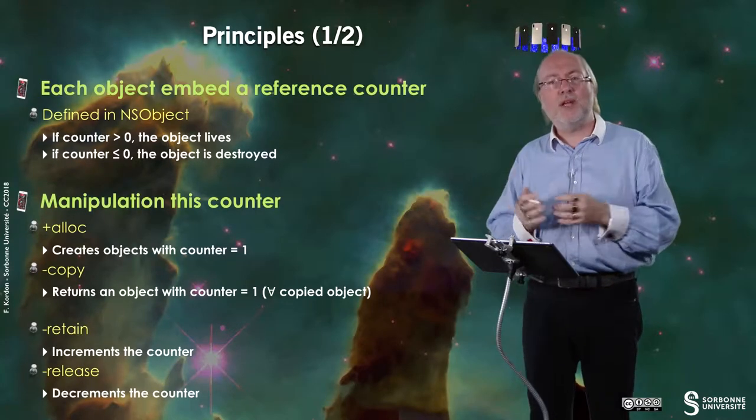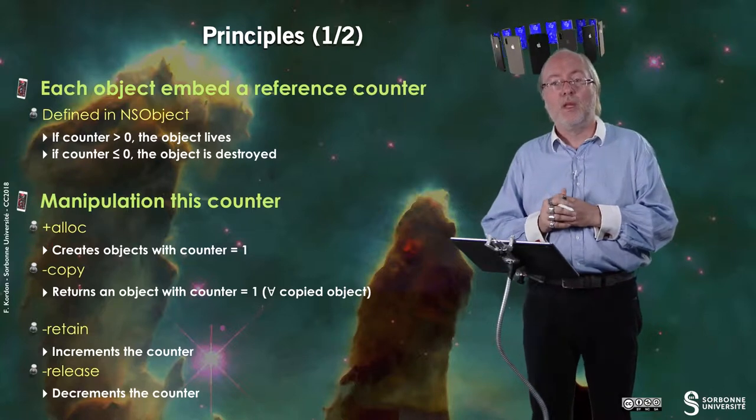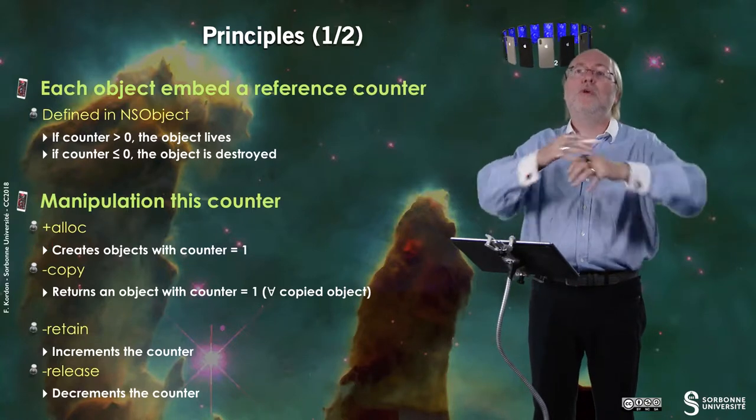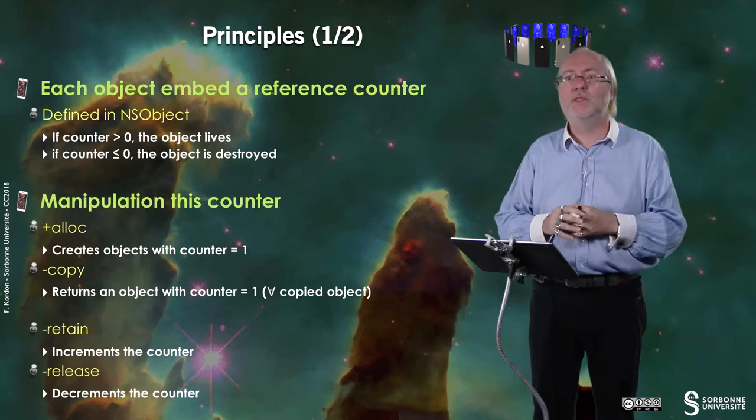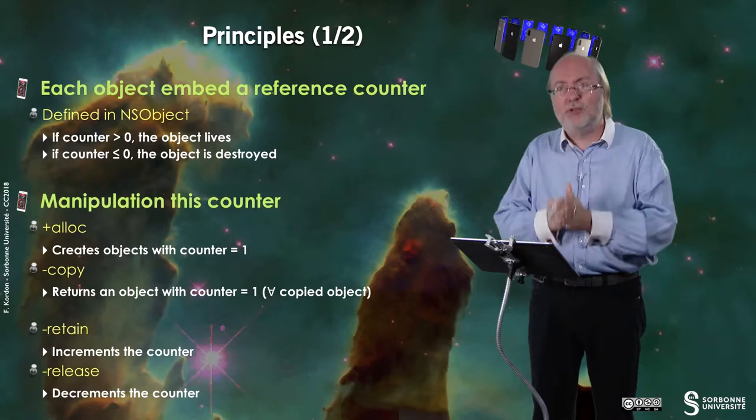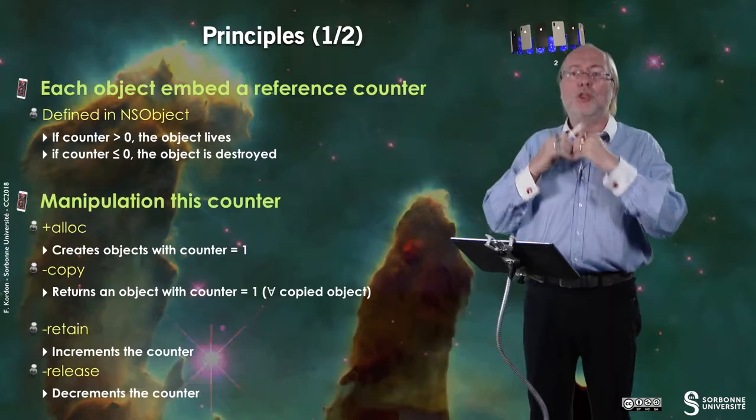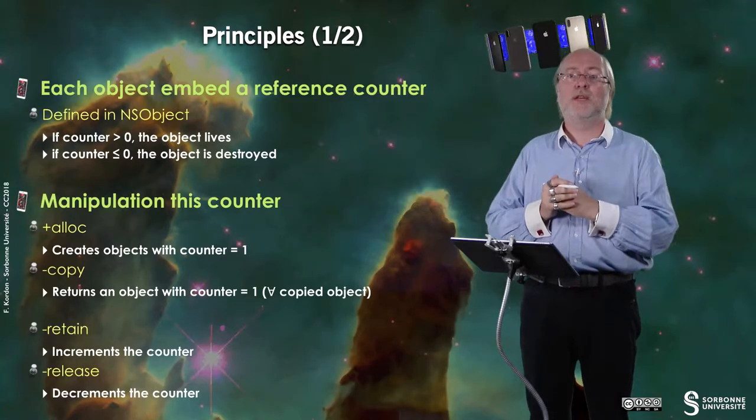You can manipulate this counter and there are several instructions that allow you to manipulate this counter. The first one is Alloc. The class method that allows you to allocate memory for an instance of class or for an object will create an object with a counter equal to one because you are creating it and this counter means that there is one owner. The owner is at least you, self, the object that creates this new object.